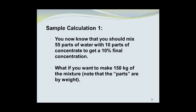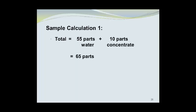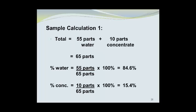What if we want to make 150 kilograms of the mixture, and we have to note that these parts are by weight? So we take the total number of parts, which is 55 parts water plus 10 parts concentrate, equaling 65 parts, which gives us the percentage of water as being 55 parts of water over 65 parts total times 100%, or 84.6% water. The percent concentrate is given by taking the 10 parts concentrate, dividing by 65 parts in total times 100%, which is 15.4%, or you could have subtracted the 84.6% water from 100% to get 15.4% concentrate.